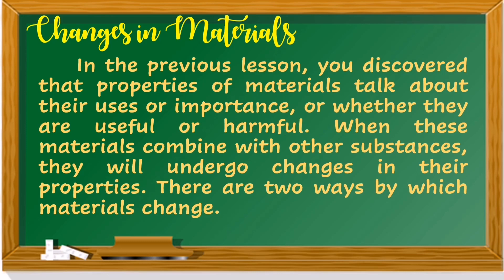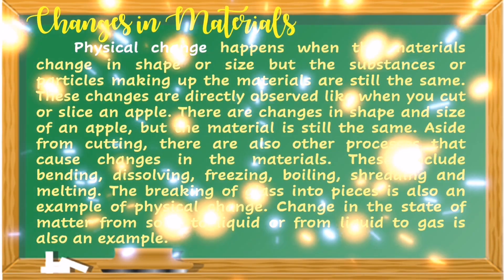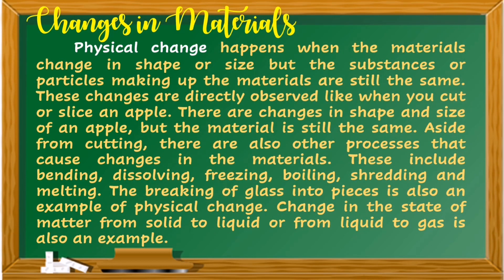There are two ways by which materials change. First, physical change. Physical change happens when the materials change in shape or size, but the substances or particles making up the materials are still the same. These changes are directly observed, like when you cut or slice an apple — there are changes in shape and size, but the material is still the same.